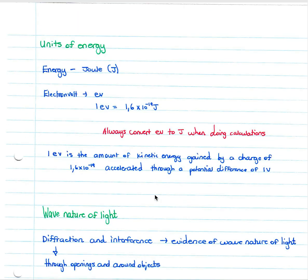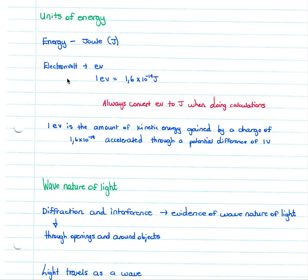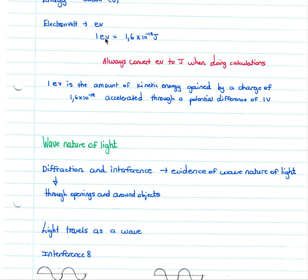When looking at units of energy, we measure energy in joules with the symbol J. An electron volt uses the symbol eV, and one electron volt is 1.6 times 10 to the negative 19 joules. You must always convert electron volts to joules when doing calculations — values may be given in electron volts and must be converted before calculating. One electron volt is the kinetic energy gained by a charge of 1.6 times 10 to the negative 19 accelerated through a potential difference of one volt.